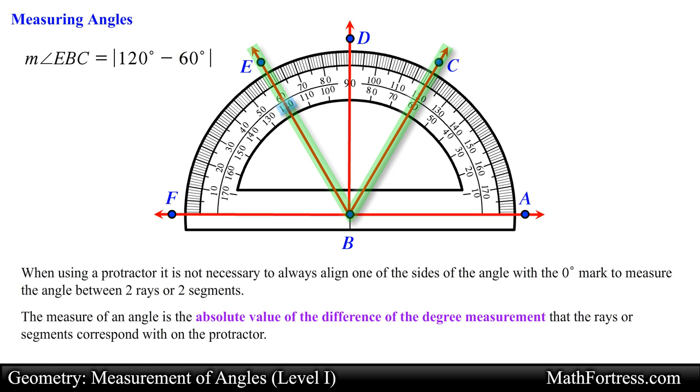In this case the measurement of angle EBC is 60 degrees. In general the measure of an angle is the absolute difference of the real numbers that the rays or segments correspond with on the protractor.